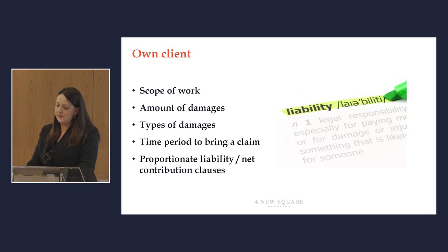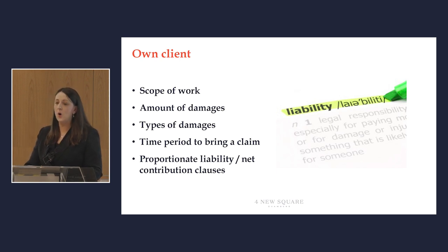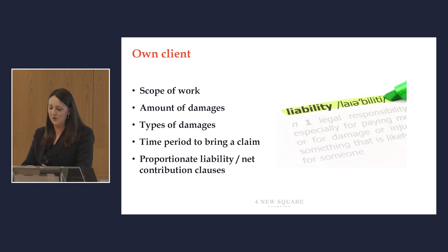Third, types of damages clauses seek to exclude liability for specific types of losses. In the professional services context these typically tend to be exclusions for matters such as consequential losses, loss of profits or anticipated profits. Consequential losses mean any loss which is not directly caused by the breach, arising from a claimant's particular circumstances which the parties knew or should have known about when the contract was entered into. The trouble with this type of clause in the professional liability context is that professionals are particularly prone to causing exactly this type of loss, begging the question of whether excluding this type of damage could ever be said to be reasonable.